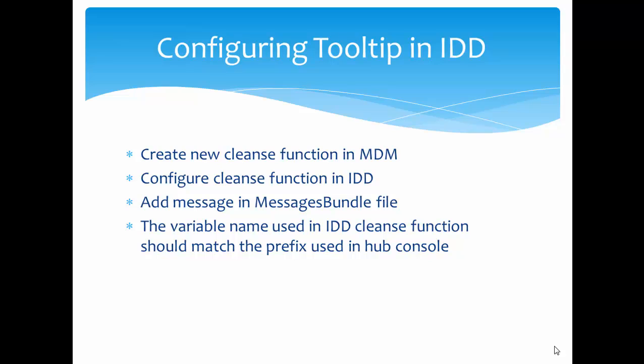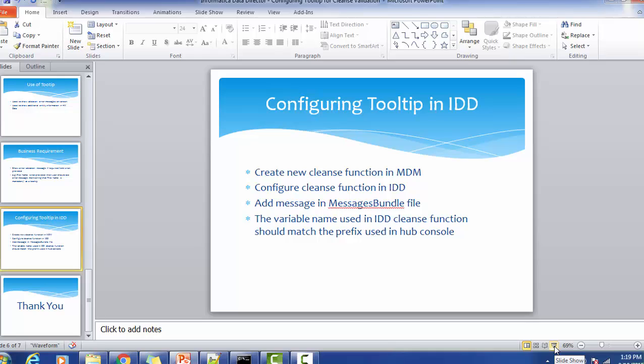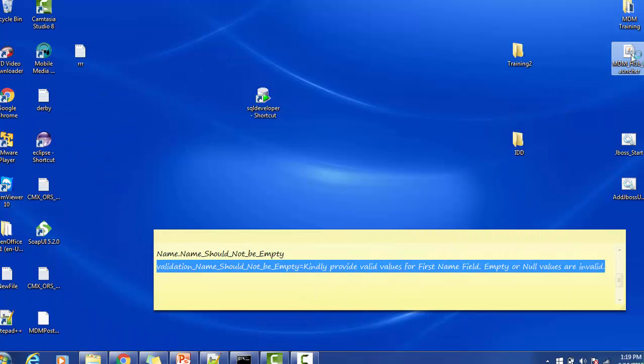To configure the tooltip, there are several steps. First, create a clean function in the MDM hub side. Then configure that clean function in the IDD application. Next, update the message bundle of the IDD application, and finally clear the cache and redeploy the application. Note: the variable name used in the IDD clean function should match the prefix used in the hub console, and the validation status field name is case-sensitive.